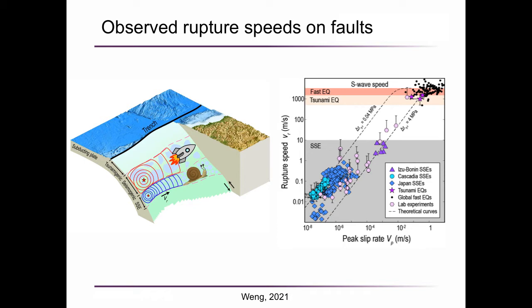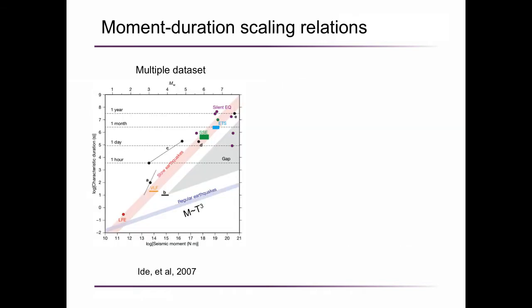For regular earthquakes, the amplitude of seismic waves are so strong that we can detect the shaking waves. But this is not the case for slow slip events, so we need to use GPS to constrain their source property. The empirical scaling relation between seismic moment and rupture duration has been used to understand the physics of slow slip events.